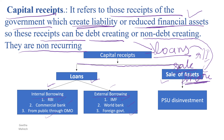Under sale of assets, the government sells its public sector undertakings, which is called disinvestment. The government sells financial shares of government companies to private individuals or private entrepreneurs. This selling or unloading of government shares is called a reduction of financial assets of the government.